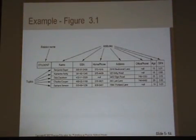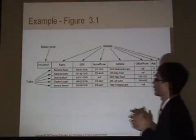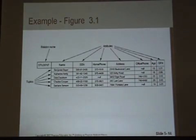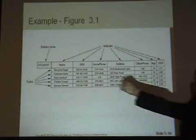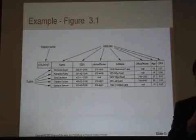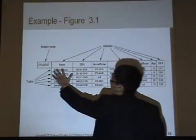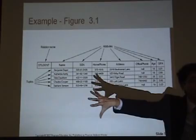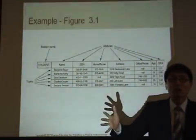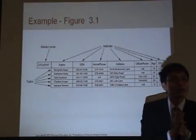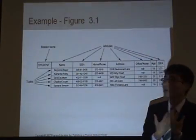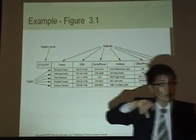Here is an example of the student relation. We can see five tuples and six or seven attributes. Each tuple has values. Those values should be atomic — meaning, for example, the name attribute is one unit and cannot be divided into two. If it can be divided, we should have different attributes like first name and last name. But from our ER model, we defined it as one word.